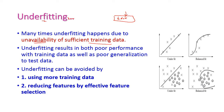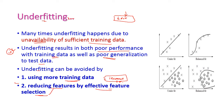Underfitting reduces performance — it causes poor performance on training data as well as poor generalization to testing data. To overcome underfitting, we should increase the training data set and reduce the features by effective feature selection. We need to select only the required attributes from a record, then the underfitting will be overcome.